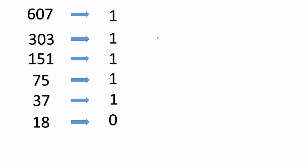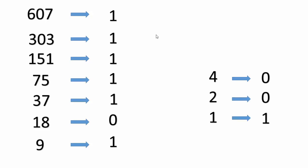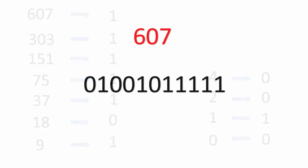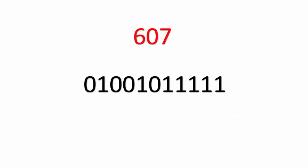Now 18 being even, we write down 0 and simply divide by 2 to get 9. 9 being odd, we write down 1, subtract 1 and divide by 2 to get 4. Continuing: 4 → 2 → 1 → 0. And this is how we construct our binary representation of 607, which is 0 1 0 0 1 0 1 1 1 1.